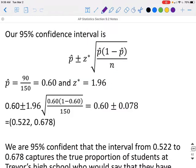Our 95% confidence interval—remember back from Chapter 8—to find a confidence interval for a proportion, you're going to do P hat plus or minus z star times the square root of P hat times 1 minus P hat all over n. In our case, our P hat value is 60%.